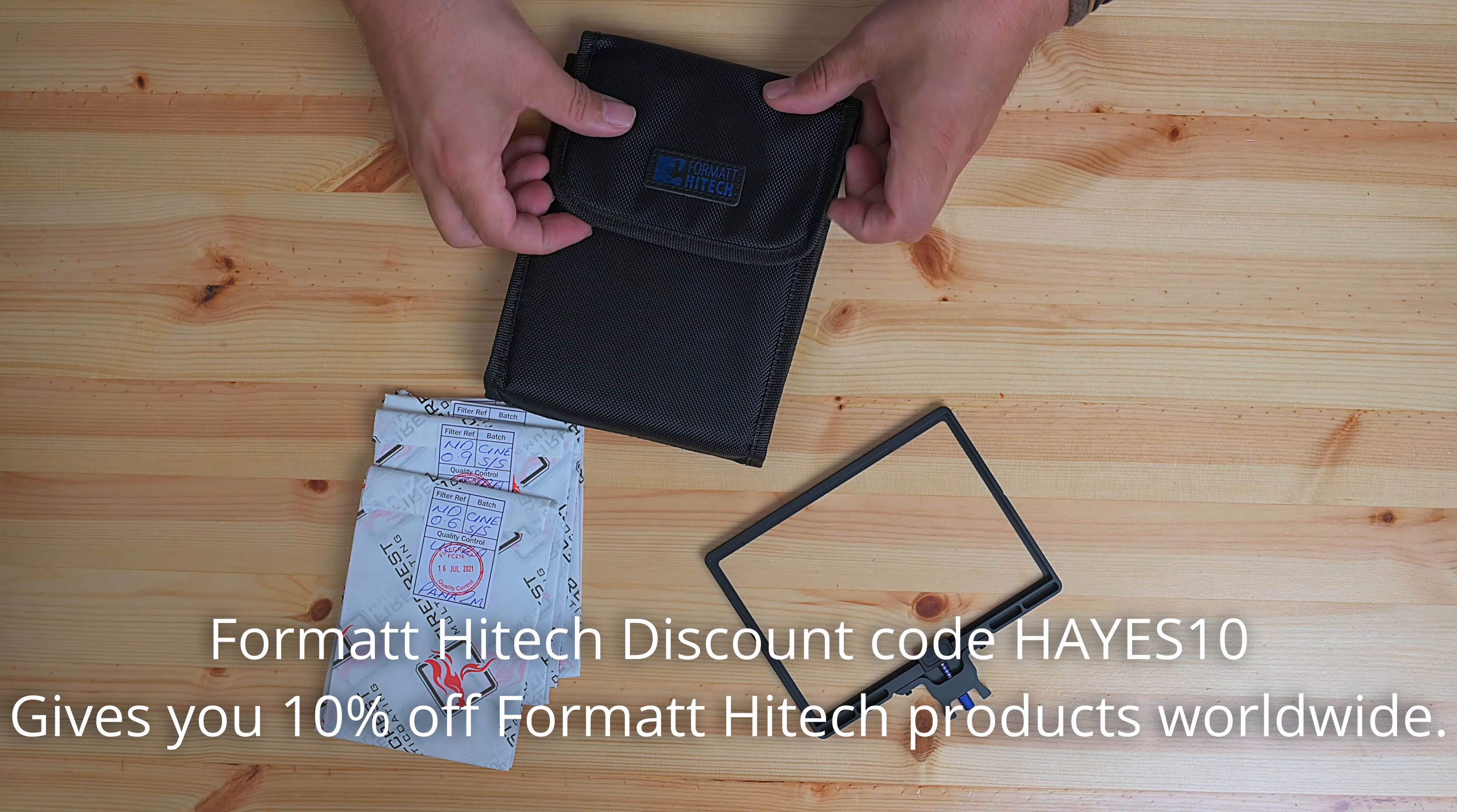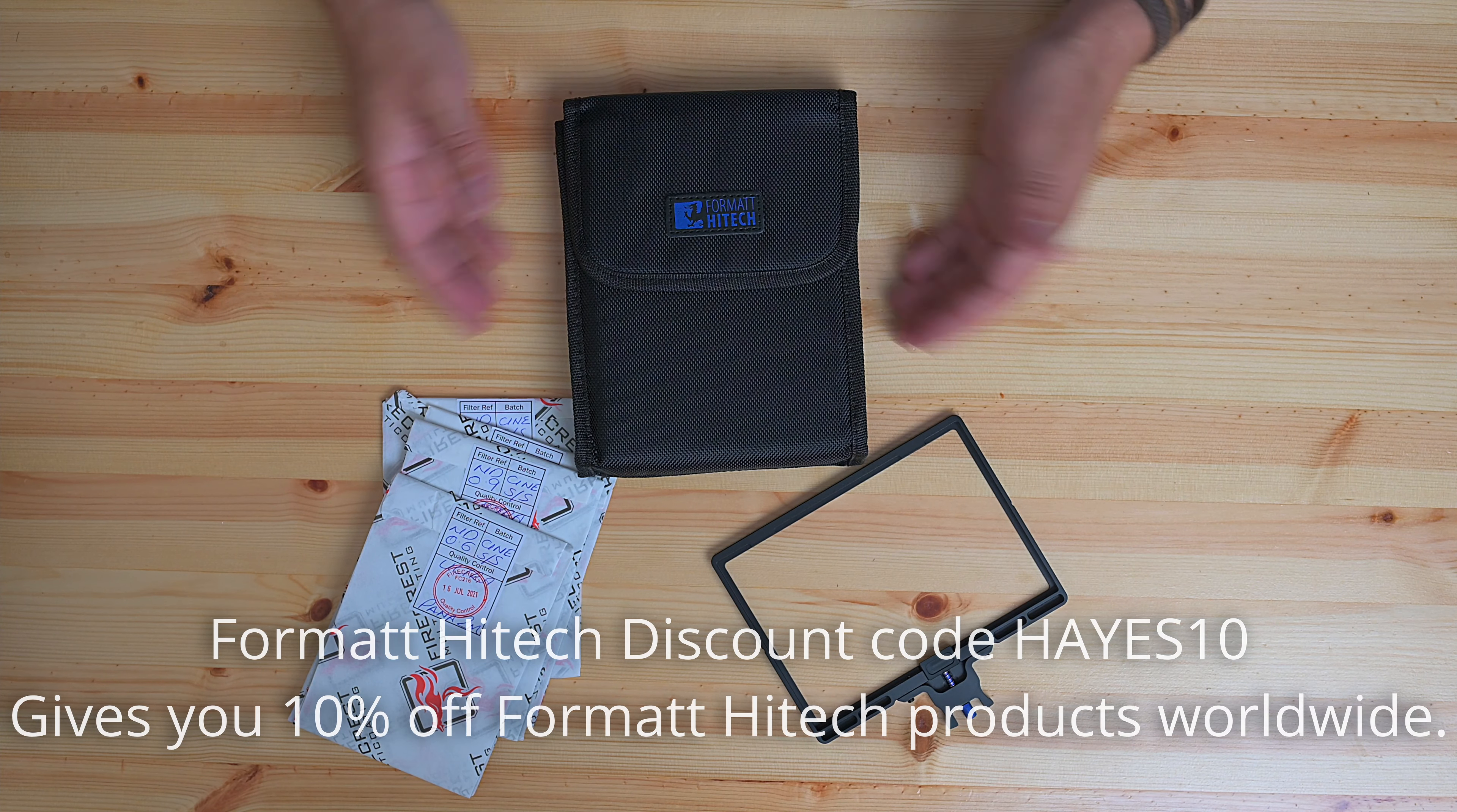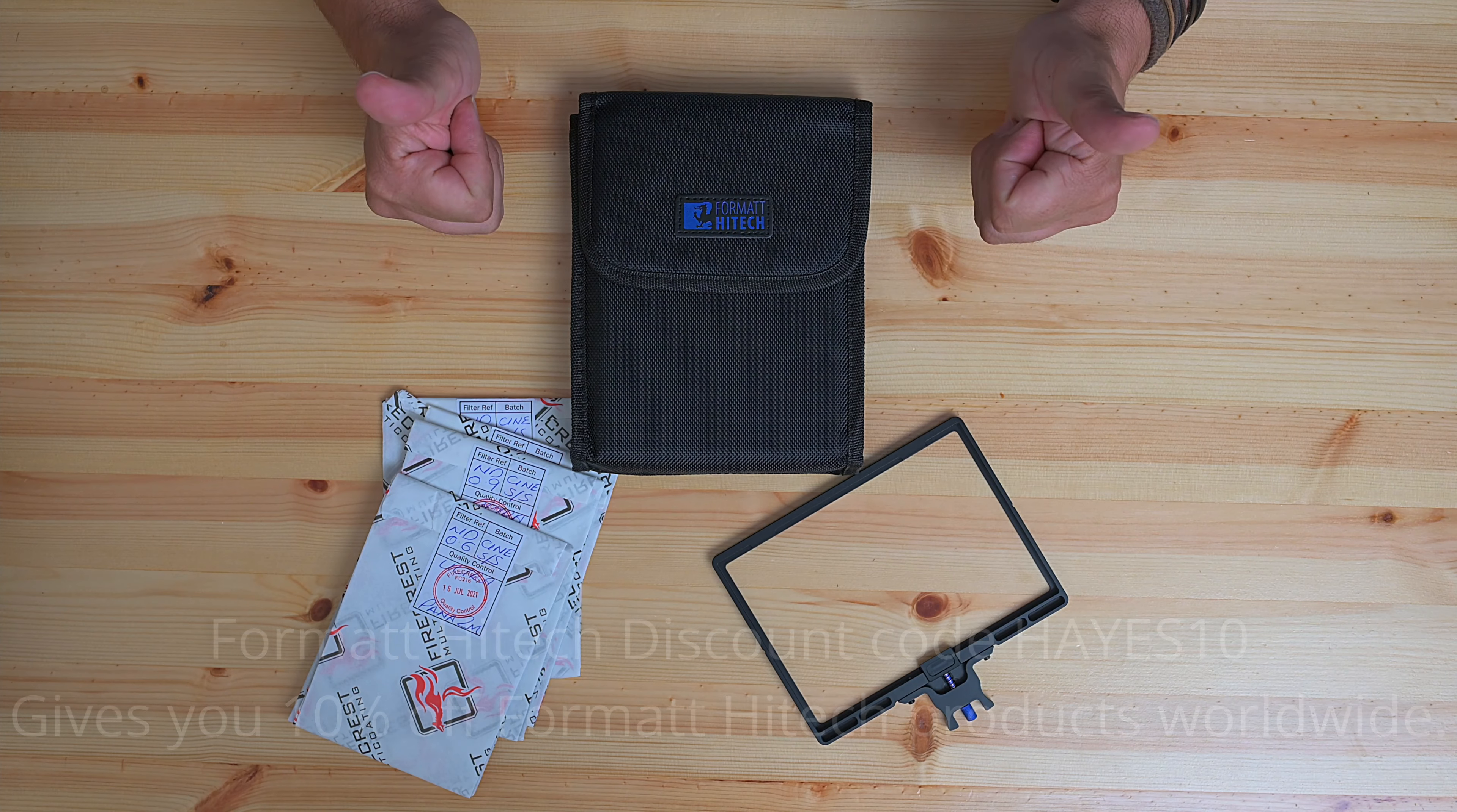As the text says below, you can use the discount code HAYES10 to get 10% off all Formatt Hitech products via both the USA and European websites. This offer does exclude sale or special items.